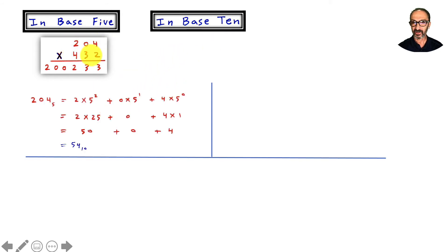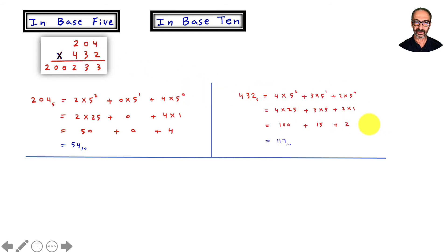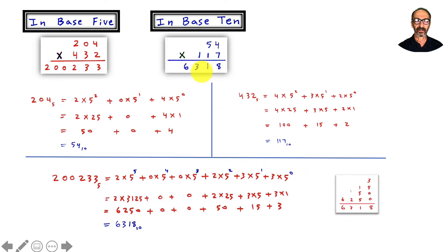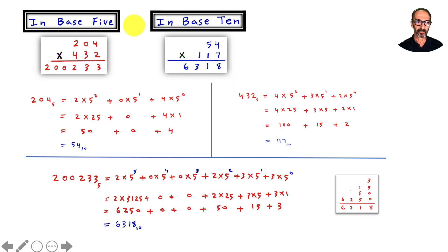Let's convert everything to base 10 to verify. For 204 in base 5: 2 times 5 squared plus 0 times 5 to the first plus 4 times 5 to the zero — doing the math we get 54 in base 10. For 432 in base 5, the same idea gives us 117 in base 10. Now the answer 200233 in base 5 converts to 6318 in base 10. And 54 times 117 is indeed 6318 — it checks out.